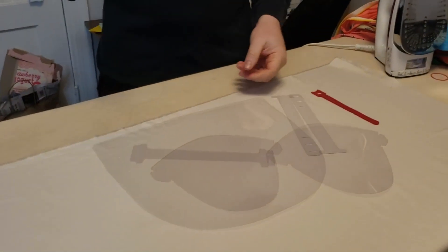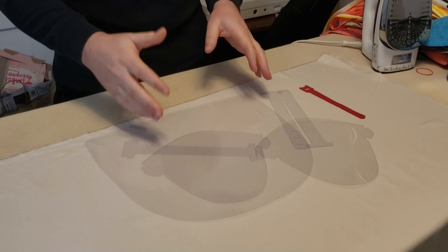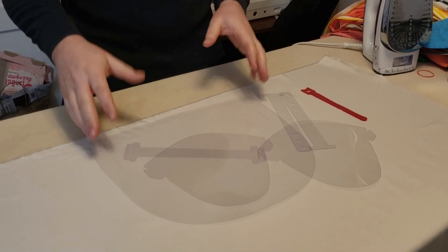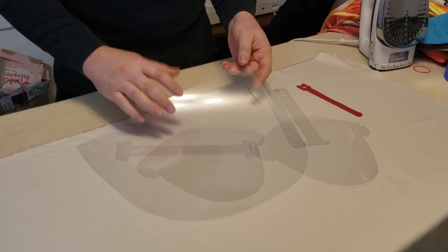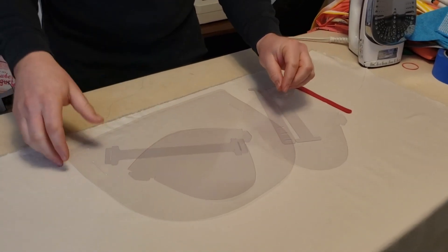So we used 7 mil plastic, .007 inches, and we used 17 by 11 inch pieces of 7 mil acetate. I used binding covers. You can find those, just Google binder covers or binding covers.